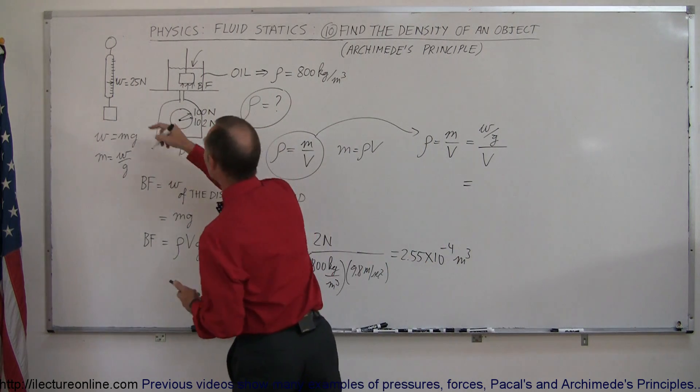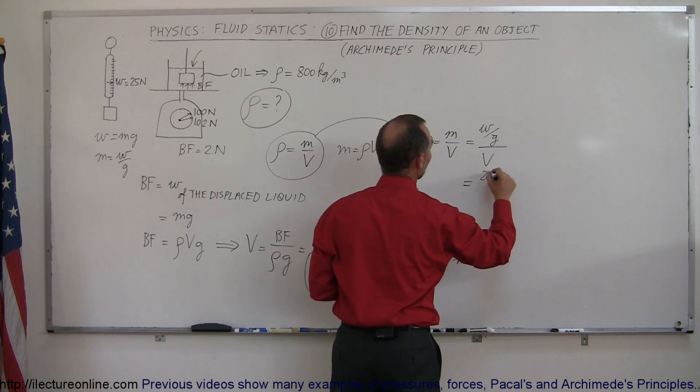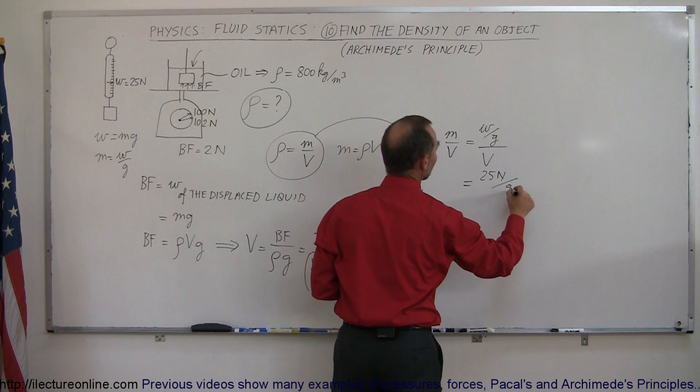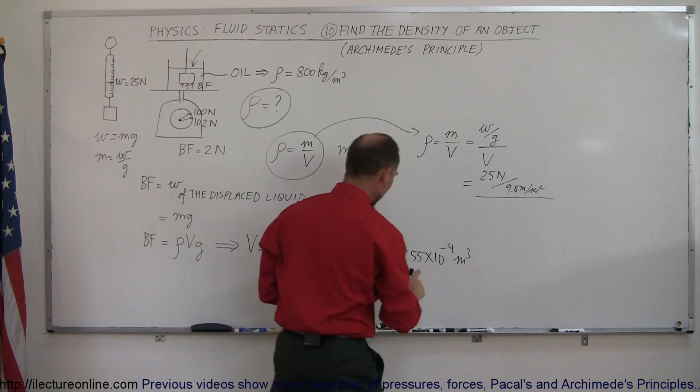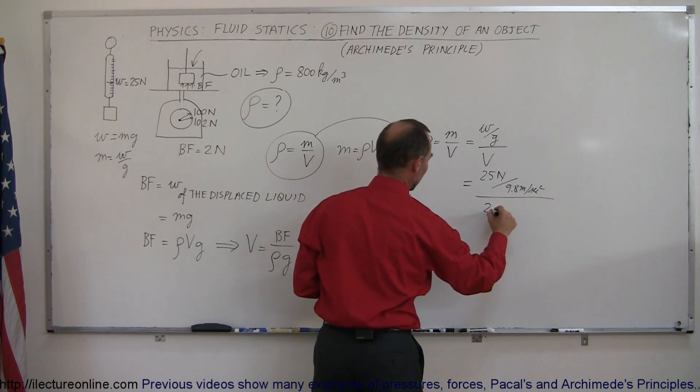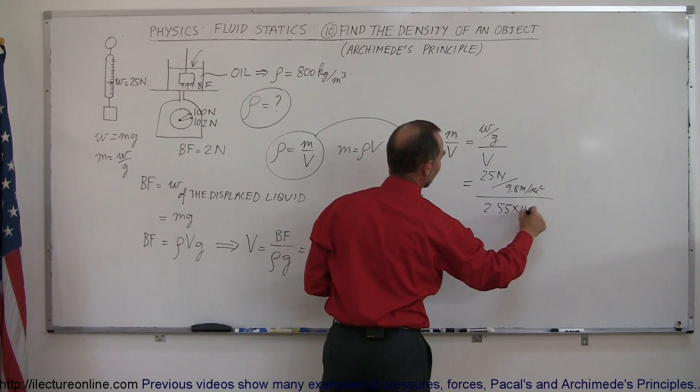Plug in the numbers that we have. We have 25 newtons for the weight, divided by 9.8 meters per second squared. And then take the whole thing and divide it by the volume, which we just found, which is 2.55 times 10 to the minus 4.